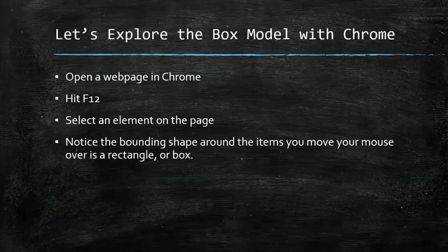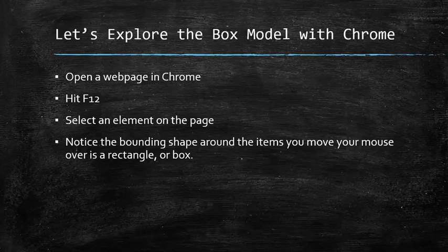There's something we haven't discussed yet and it's really, really important to be able to master CSS, and it's something called the CSS box model. Although we haven't mentioned it, you will have seen it on some of the examples we've looked at. We're going to have another look at a web page in Chrome and press F12 to open up Chrome's inspector, then we can move our mouse around the page and see what happens.